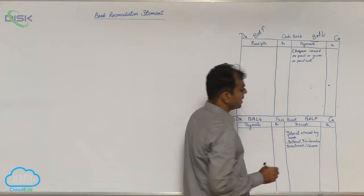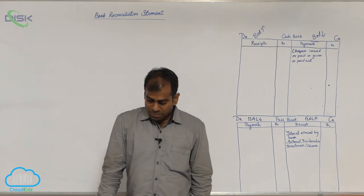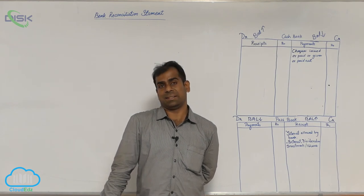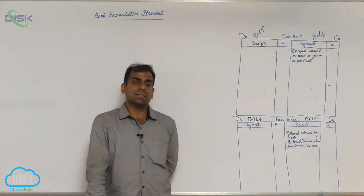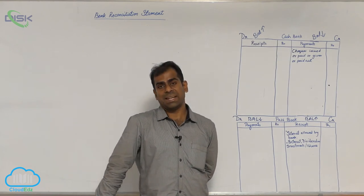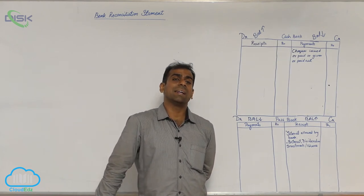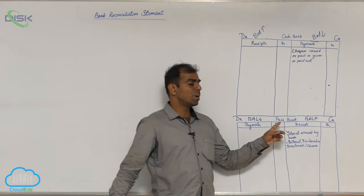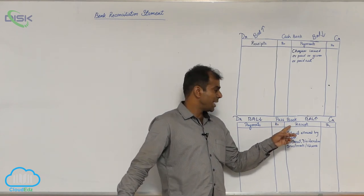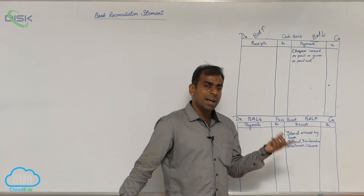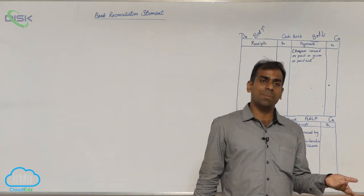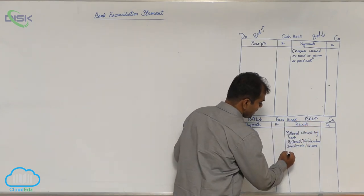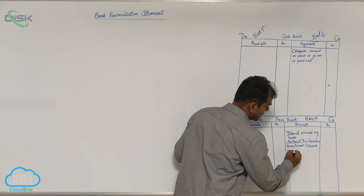The fourth item is direct payments into bank by a customer. Your customers have to give you money, but instead of coming to you, they directly put the money in the bank. When they do that, the bank comes to know about it first and makes an entry in your pass book. When your customers give you money through the bank, your bank balance increases. We call this direct deposits.